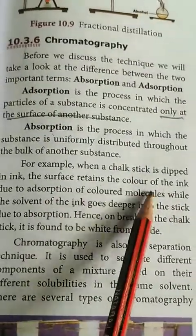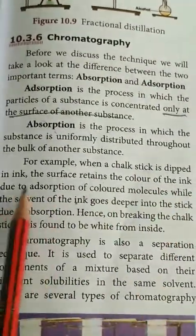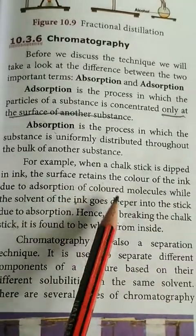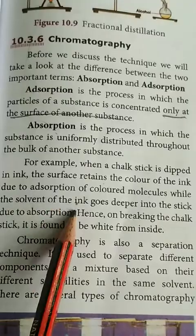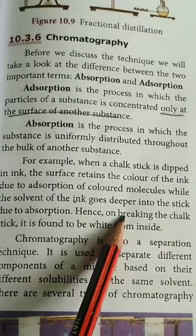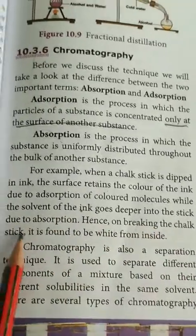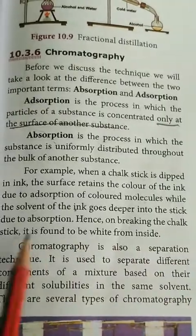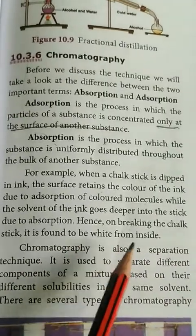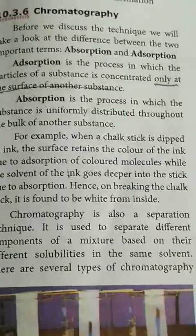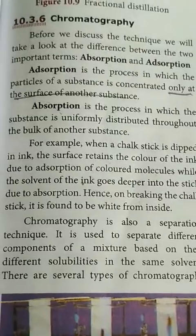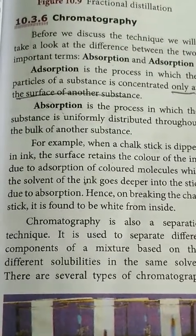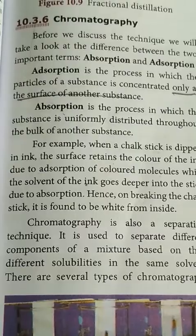For example, when a chalk stick is dipped in ink, the surface retains the color of the ink due to adsorption of colored molecules, while the solvent of the ink goes deeper into the stick due to absorption. Hence, when breaking the chalk stick, it is found to be white from inside — the outside is colored due to adsorption, while the inside is white due to absorption.